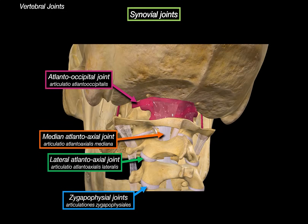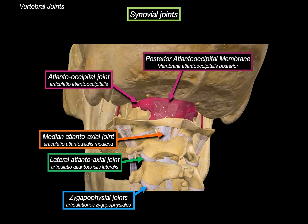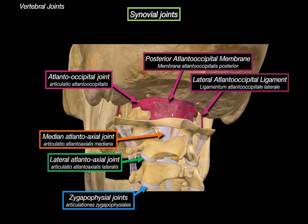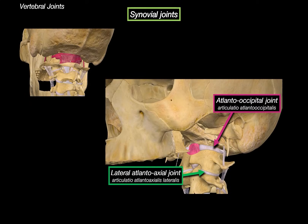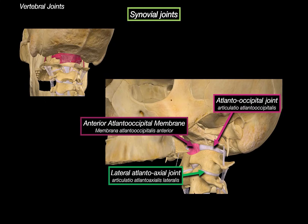The atlantooccipital joint is between the occipital condyles and the superior articular facet of the atlas, allowing mainly flexion and extension — like when you nod your head. This joint is supported by the posterior atlantooccipital membrane, connecting the posterior margin of the foramen magnum to the posterior arch of the atlas, stabilizing the joint and leaving a small opening for the vertebral artery. The lateral atlantooccipital ligament strengthens the capsule on either side, and the anterior atlantooccipital membrane strengthens the front of the joint and helps limit extension.